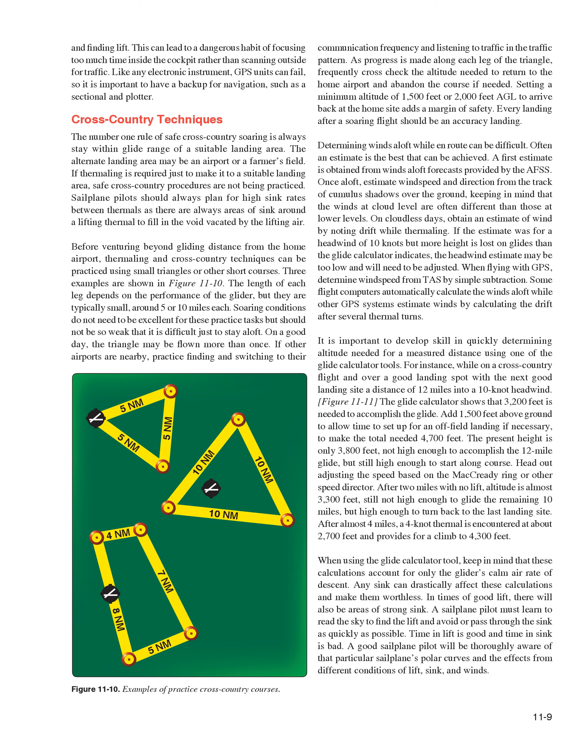Each leg of a practice triangle is typically around 5 or 10 miles. Soaring conditions do not need to be excellent but should not be so weak that it is difficult just to stay aloft. If other airports are nearby, practice finding and switching to their communication frequency and listening to traffic. As progress is made along each leg, frequently cross-check the altitude needed to return to the home airport. Setting a minimum altitude of 1,500 to 2,000 feet AGL to arrive back at the home site adds a margin of safety.